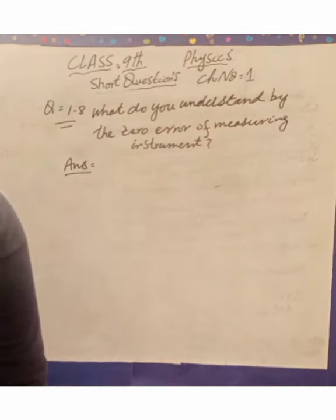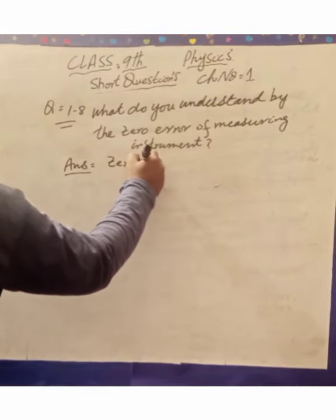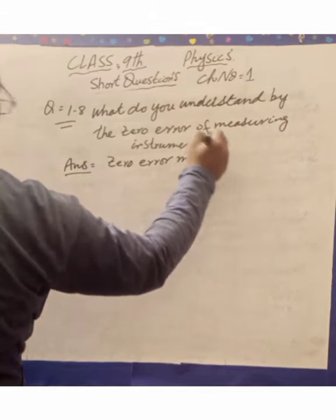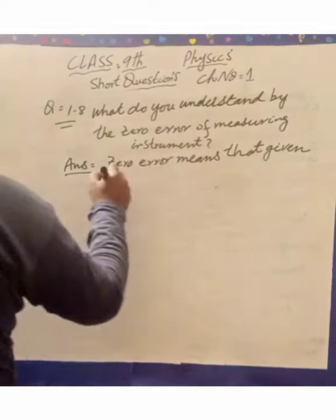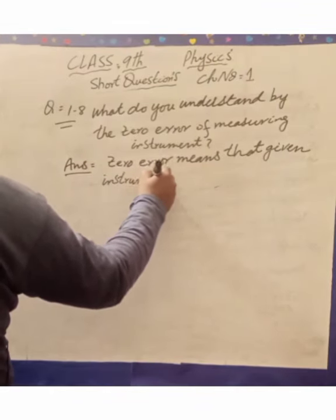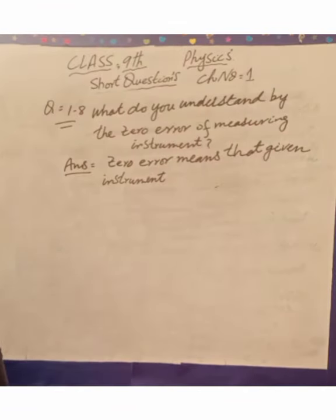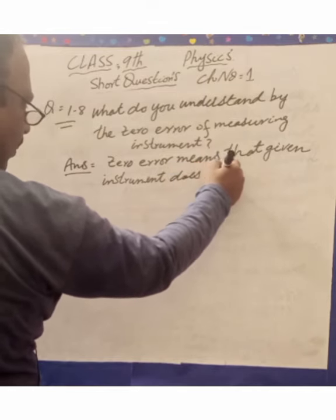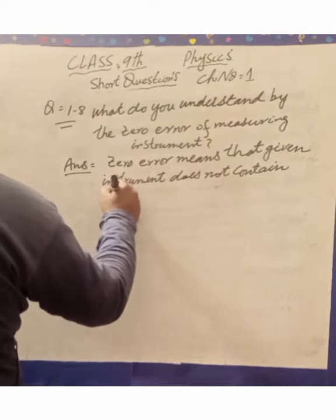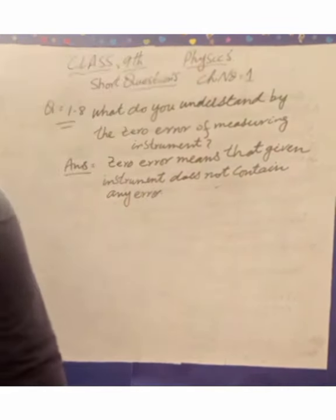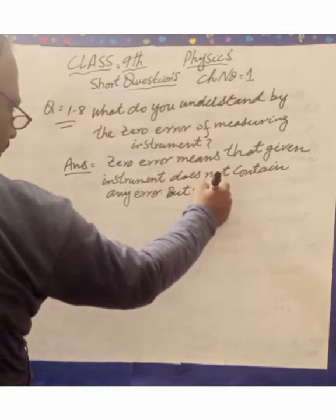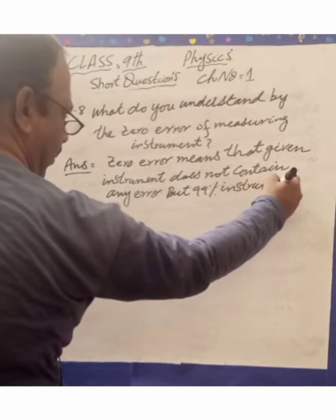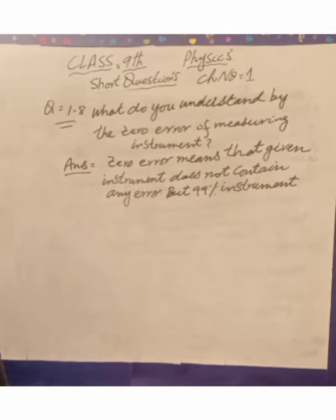Zero error means that the given instrument does not contain any error. However, 99% of instruments do not contain zero error — rather, 99% of instruments have some error.